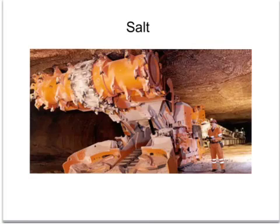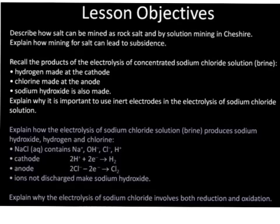This tutorial looks at how salt is extracted commercially and also how that salt can be processed by electrolysis in order to make useful industrial chemicals. We'll also look at how mining can cause subsidence, for example in Cheshire. And at a higher level, we'll look at the electrolysis of sodium chloride in more detail and what happens at each of those electrodes.